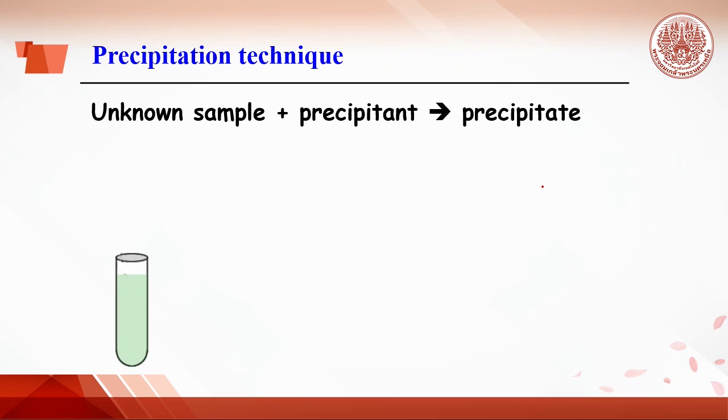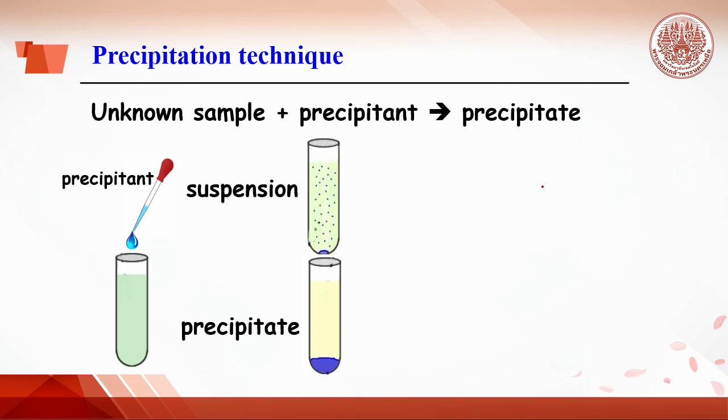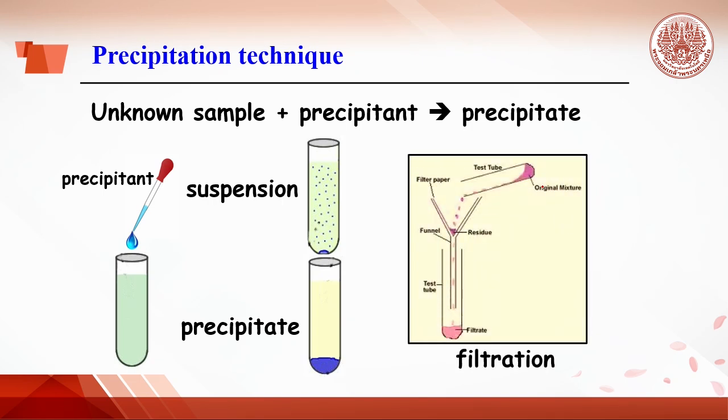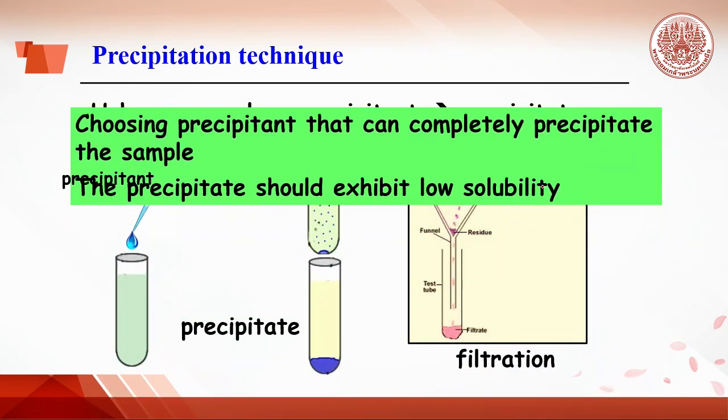Precipitation technique is the process of converting the analyzed sample or unknown sample to an insoluble product by adding a chemical called precipitant. The precipitate might be obtained from coagulate or precipitate or light precipitate called suspension. The precipitate is separated from the solution by filtration. This technique needs to choose the right precipitant that can completely precipitate the sample.